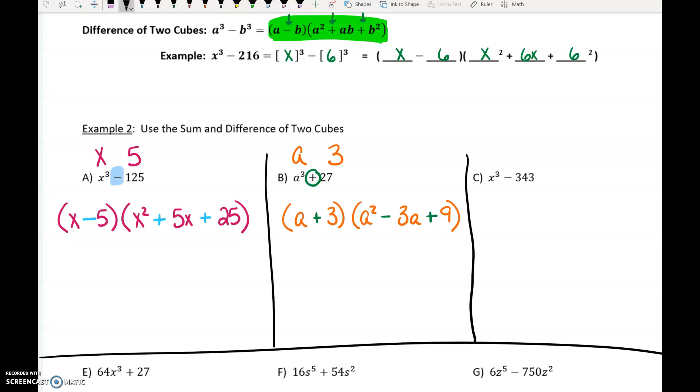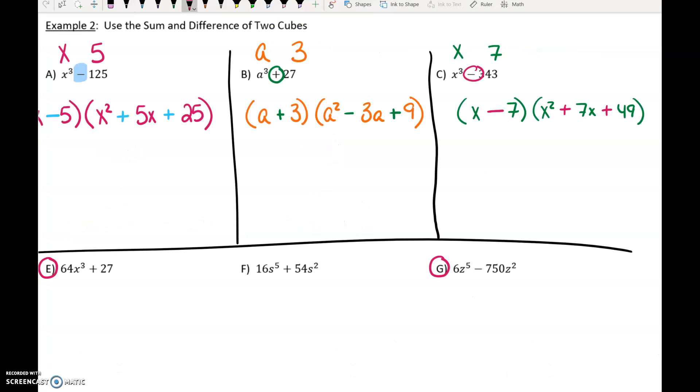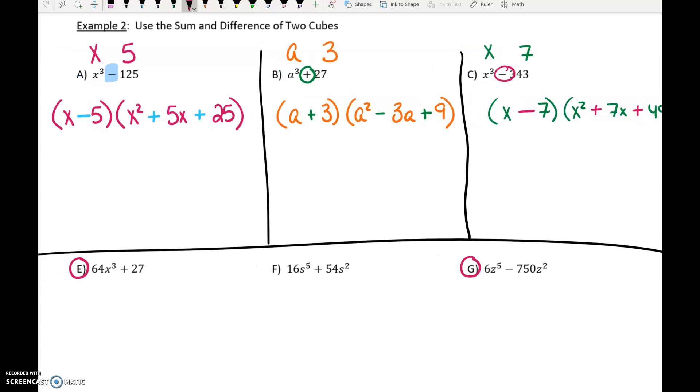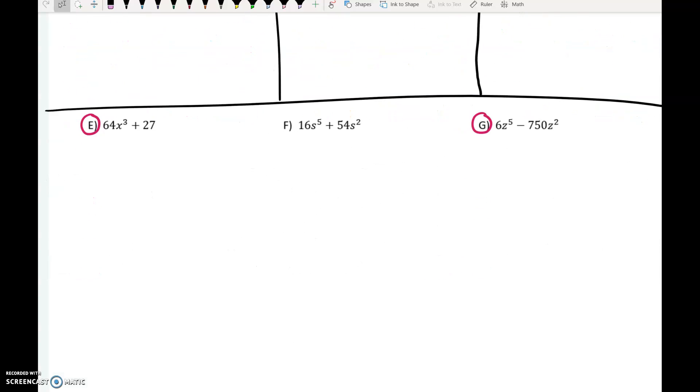I want you to pause and try C on your own. I've got X and 7, so X minus 7, X squared plus 7X plus 49. Give me a thumbs up, thumbs down. How are you feeling about that? I'm wondering how many of my virtual students are doing a thumbs up to their computer screen right now. Probably none of them, honestly. If you are, let me know, because that'd be awesome.